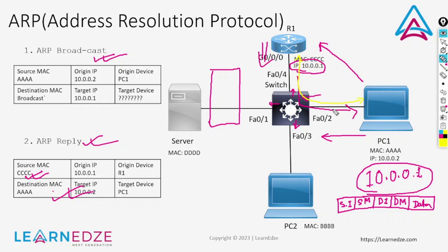When PC1 sent the ARP broadcast request to the switch, the switch quickly noted down that on fa0/2 it has PC1's MAC address. When router R1 sends the ARP reply to the switch, the switch notes down that on fa0/4, the router's MAC address is there. That's how the switch can identify each device.